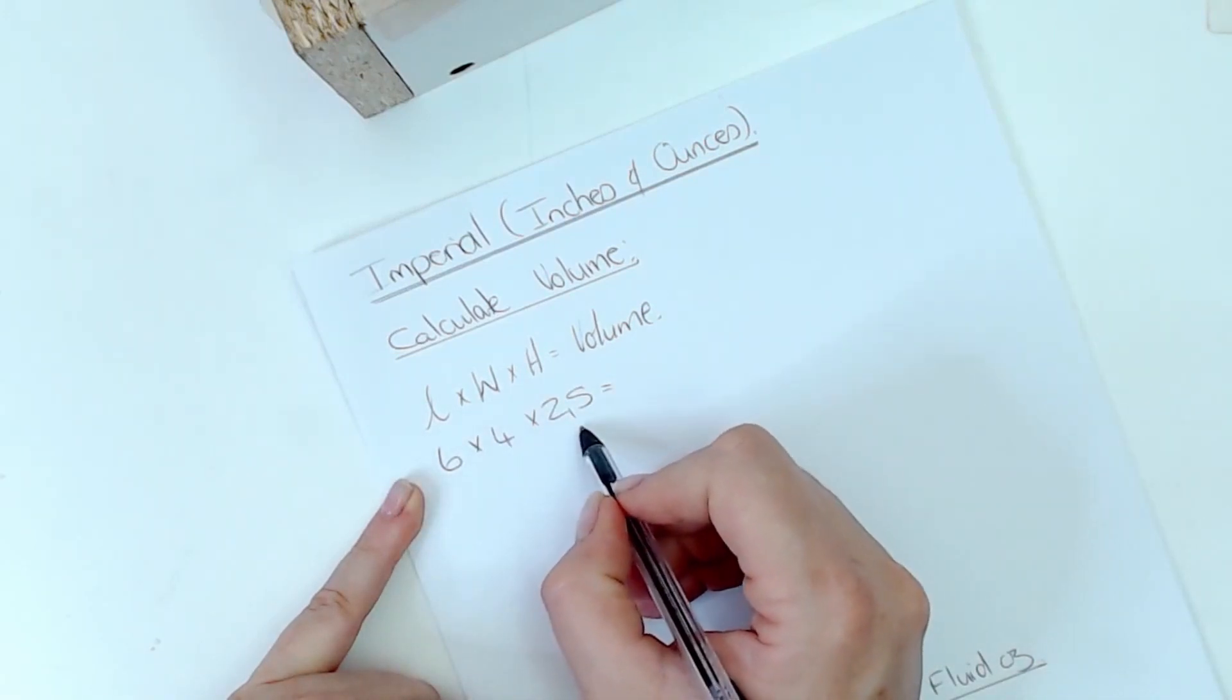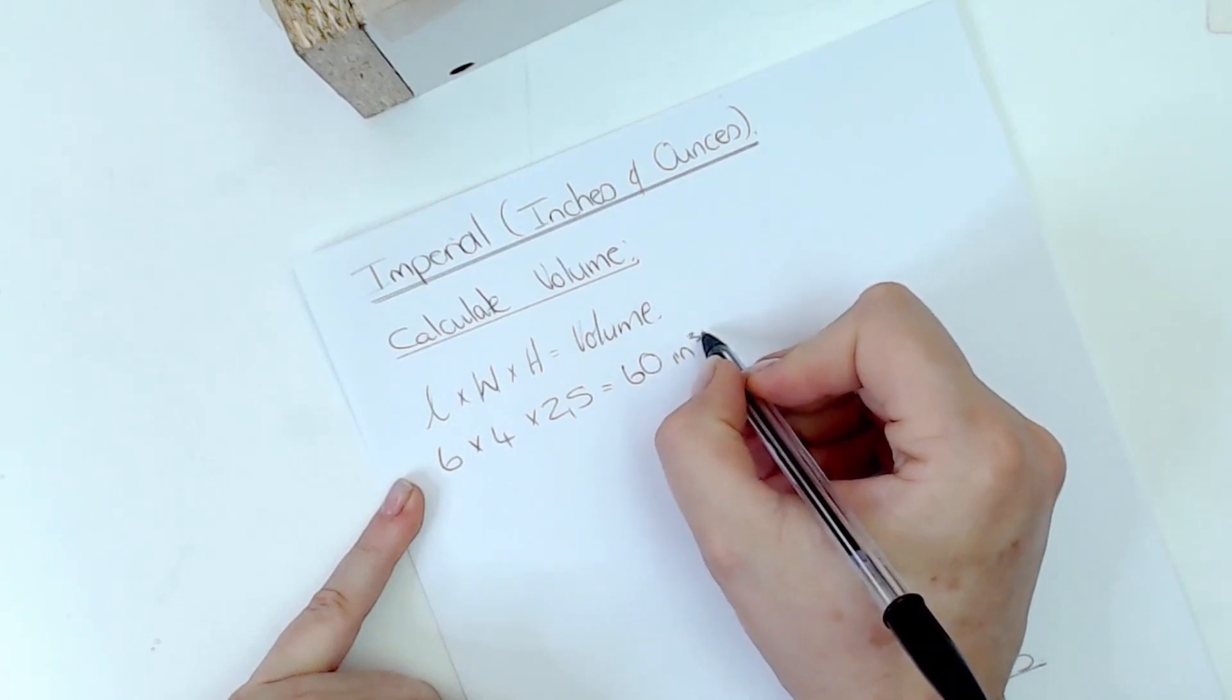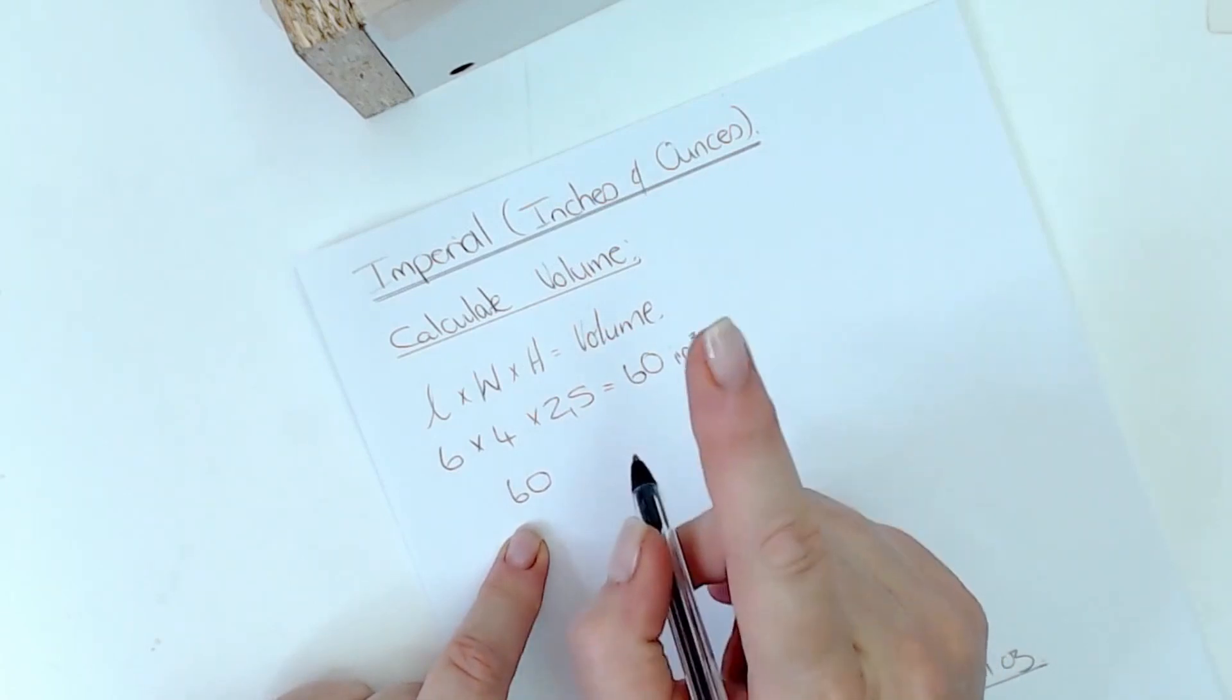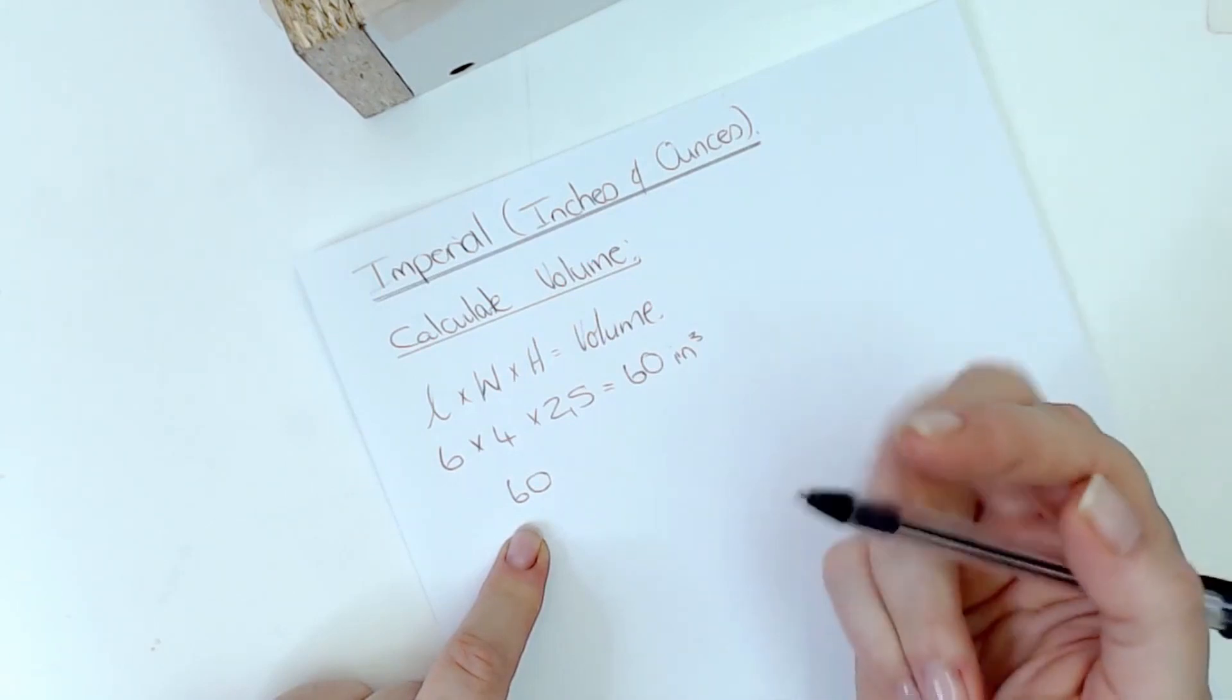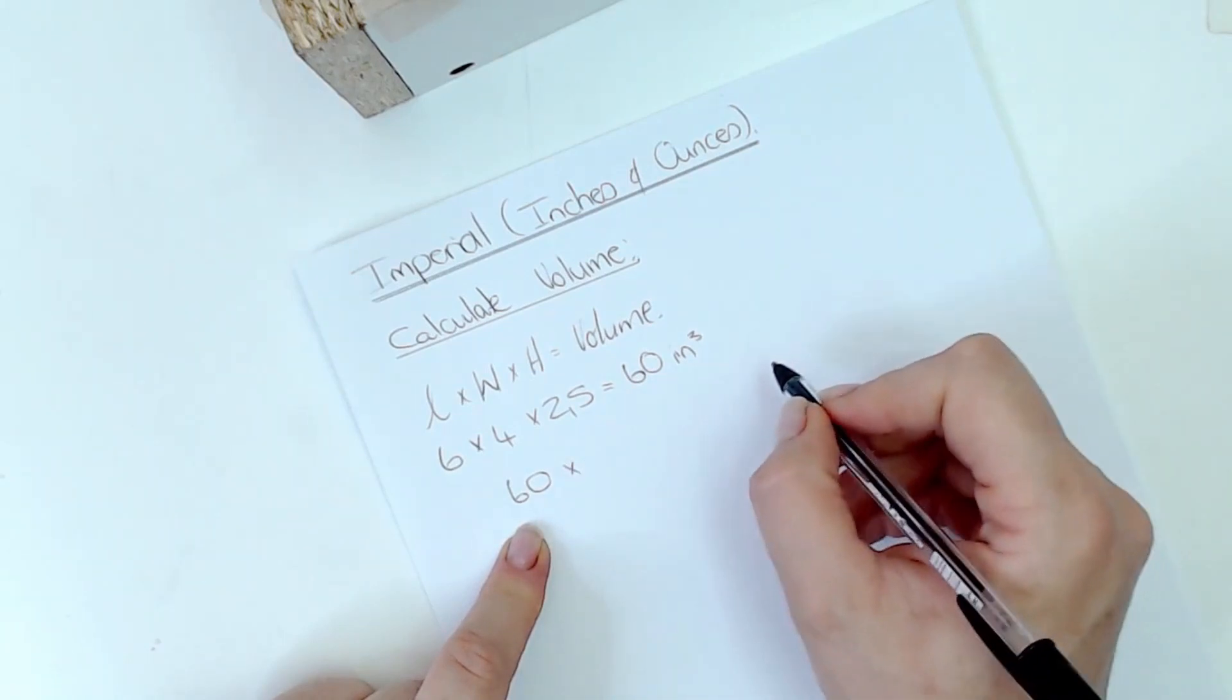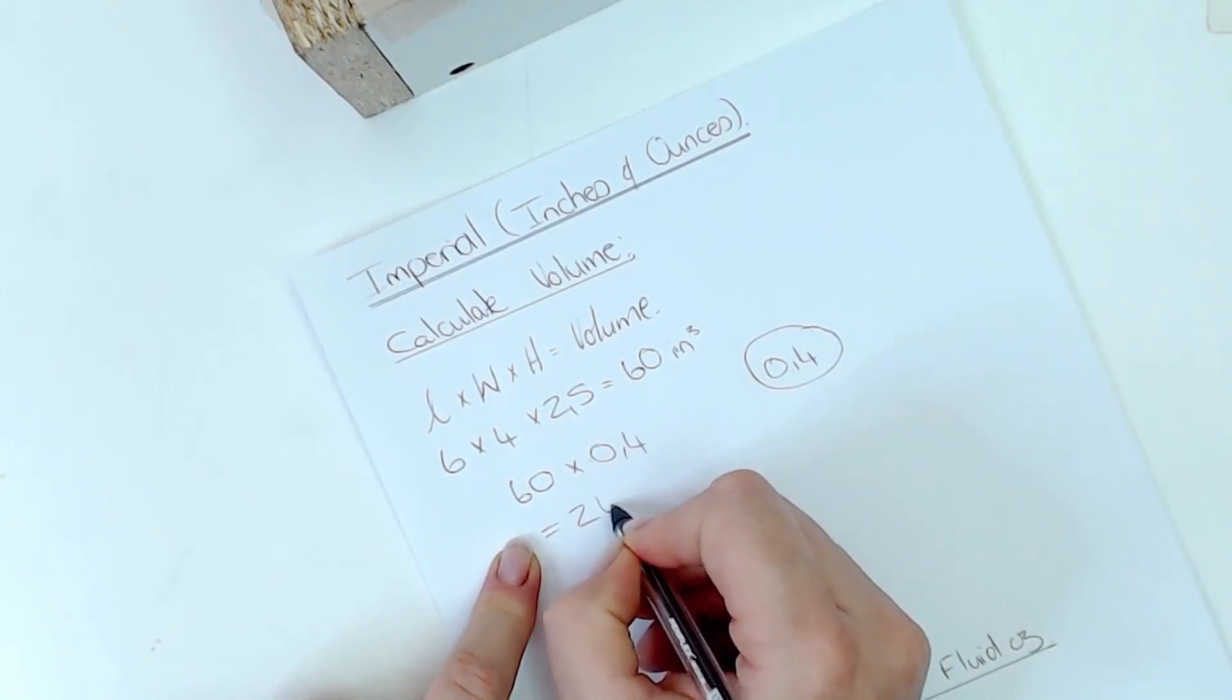Now if I take six times four times two point five, it's going to give me 60 cubic inches. Now we're going to take the 60 cubic inches because this is now the volume of our mold, but we need to know how much oil we need to use in this. Because remember, this volume is going to be filled with oil, it's going to be filled with water or a liquid sodium hydroxide, so the water and the sodium hydroxide is also going to take some of the volume up. Now we're going to take the 60 cubic inches here times a factor of 0.4, and that is going to be equal to 24 ounces.